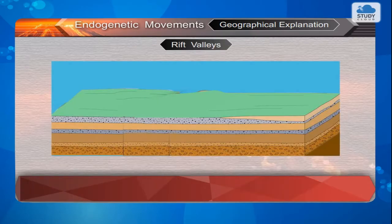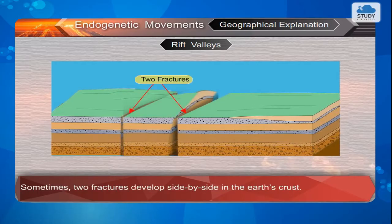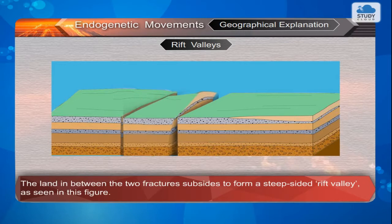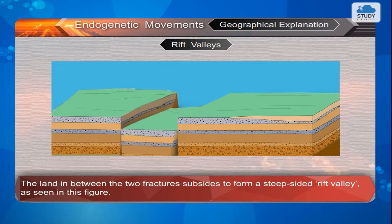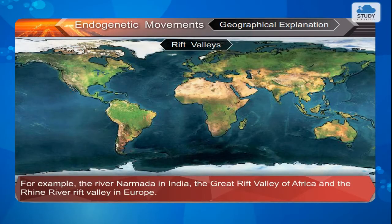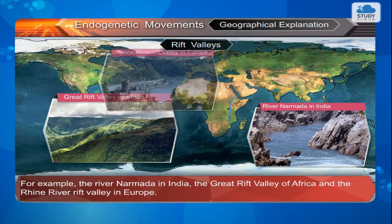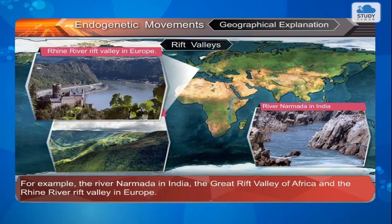Rift Valleys: Sometimes, two fractures develop side by side in the earth's crust. The land in between the two fractures subsides to form a steep-sided rift valley, as seen in this figure. For example, the River Narmada in India, the Great Rift Valley of Africa, and the Rhine River Rift Valley in Europe.